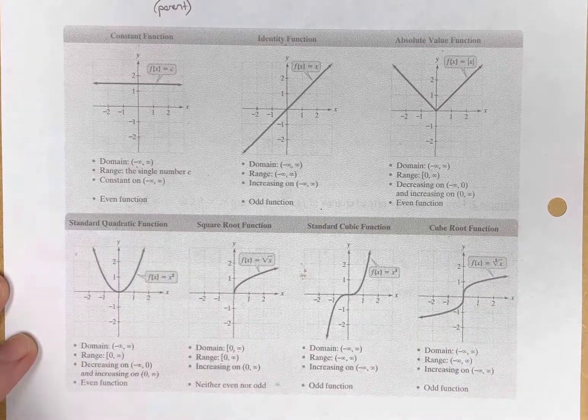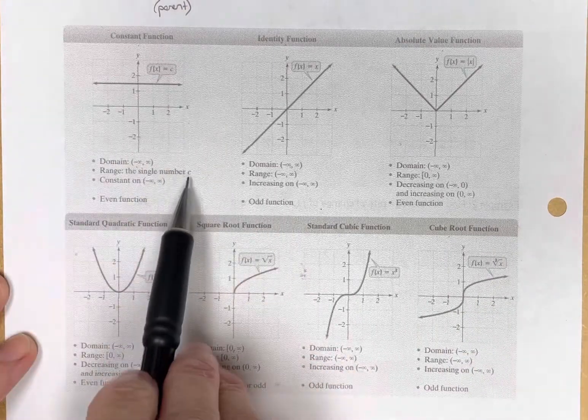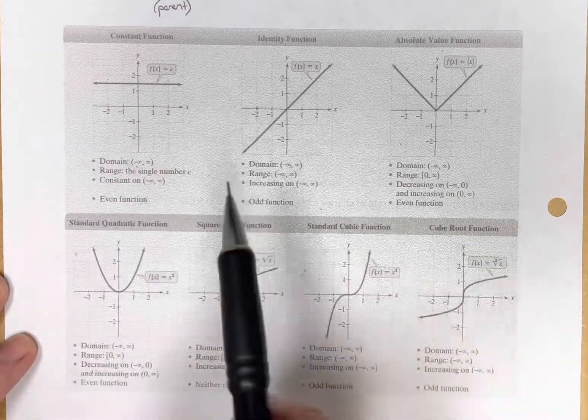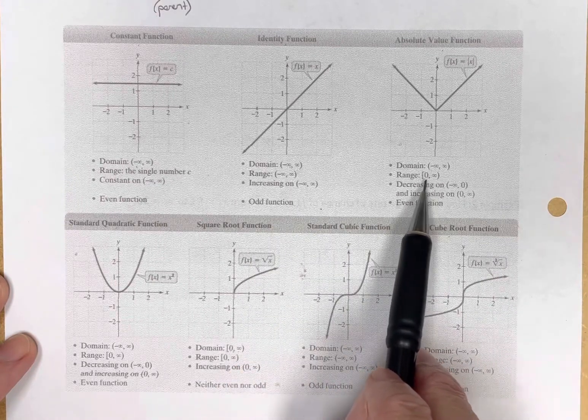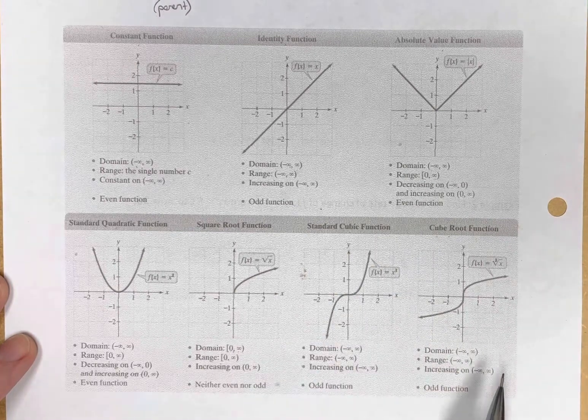The range, the range of this one is just a single number. Y equals 1.5. The range is 1.5. Negative infinity to infinity. The range of the absolute value goes from zero inclusive to positive infinity, and so on.